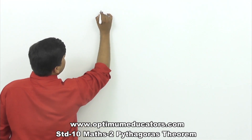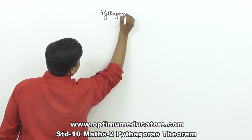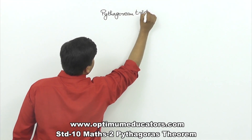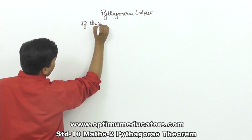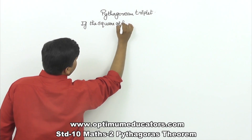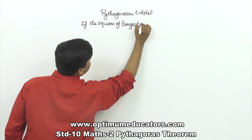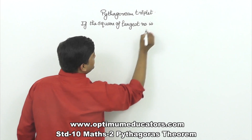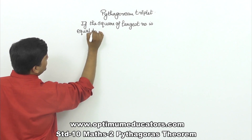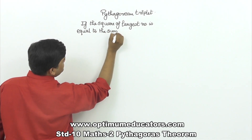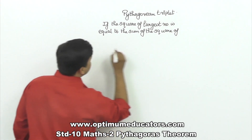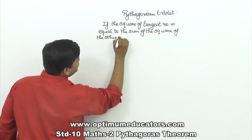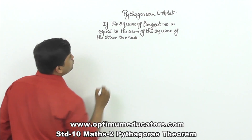Next, we are going to study something called a Pythagorean triplet. What does a Pythagorean triplet say? If the square of the largest number is equal to the sum of the squares of the other two numbers, then those three numbers form a Pythagorean triplet.